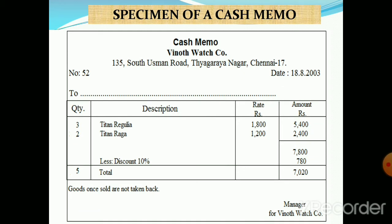Here is the specimen of a cash memo. In the cash memo, the name of the company, its address, cash memo number, and date are mentioned. The name of the person to whom the cash memo is given is also mentioned. Apart from this, the quantity, description, rate, and amount of the item are also mentioned.